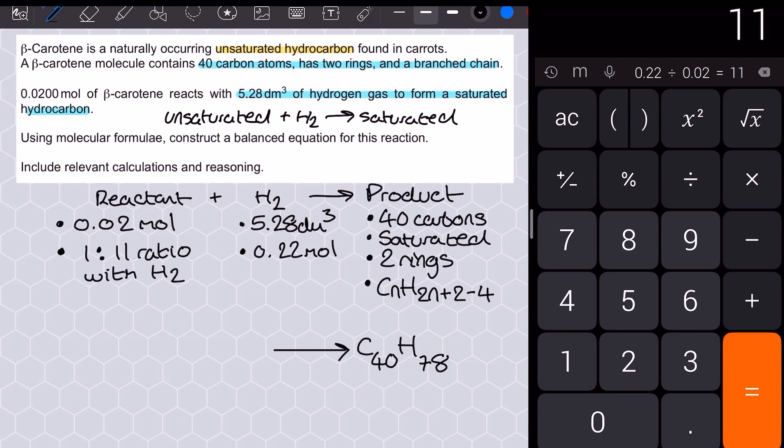What does that tell me about the structure of the reactant? Well, since there's two hydrogens per molecule of hydrogen, that means that the beta carotene is going to pick up 22 hydrogen atoms on its way to make the product. So the beta carotene has got 22 fewer hydrogens than the C40H78 I've already determined.